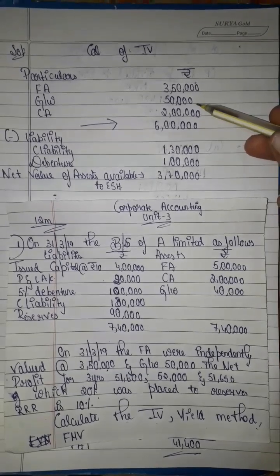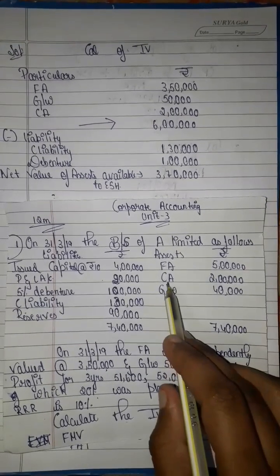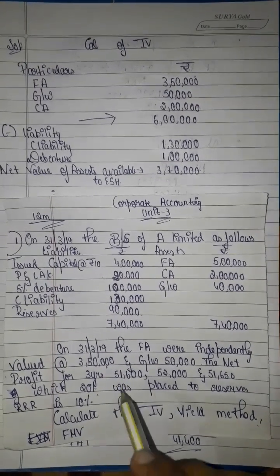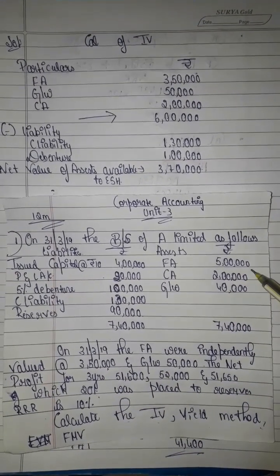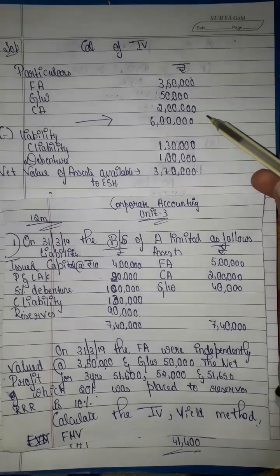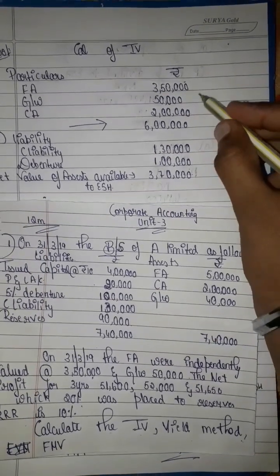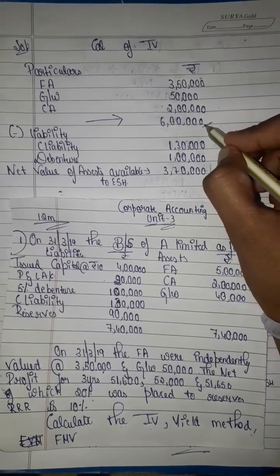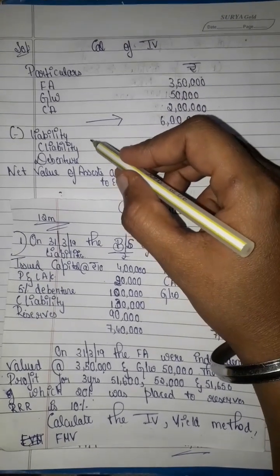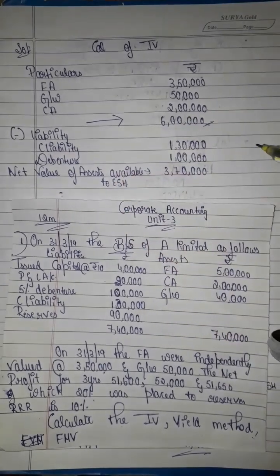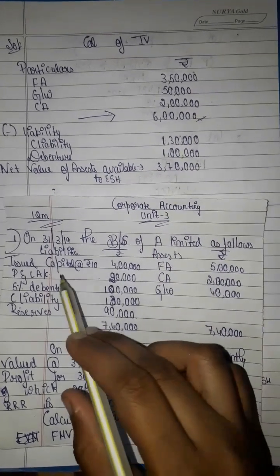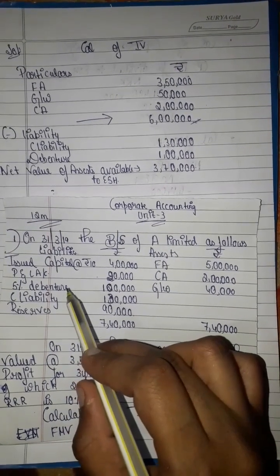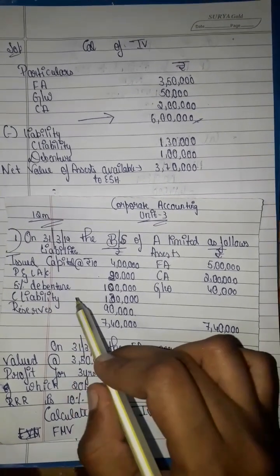The goodwill amount is 50,000. Next, we will add current assets — the current assets will be taken as per the balance sheet. Total assets come to 6 lakh rupees. Now we deduct liabilities: 5% debentures and current liabilities are subtracted from the total assets.